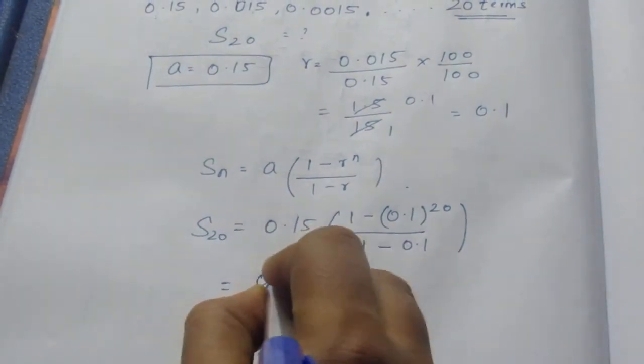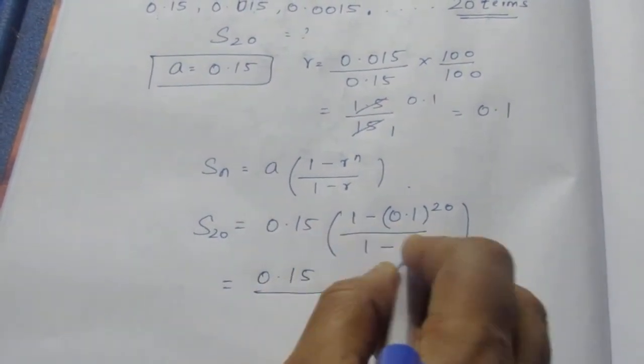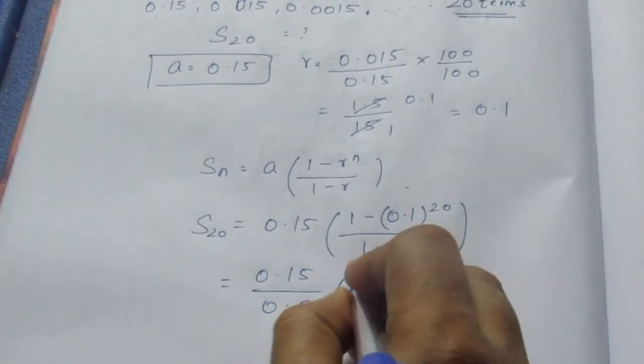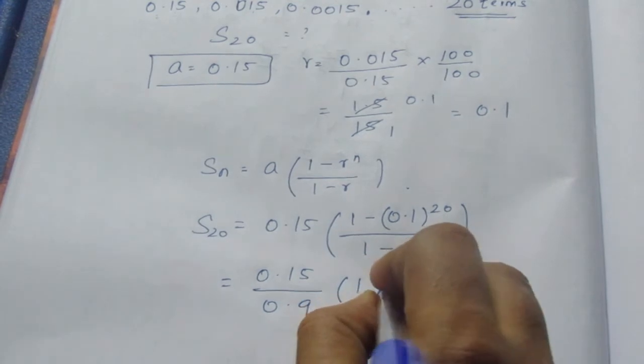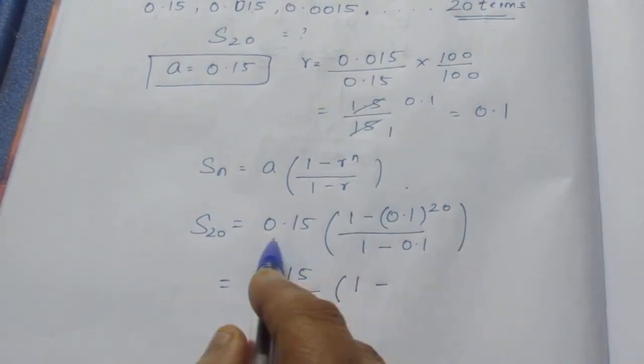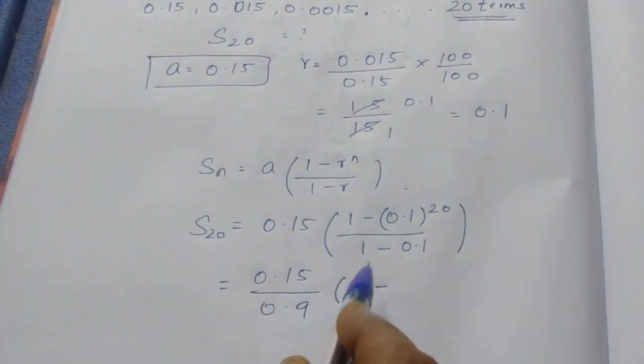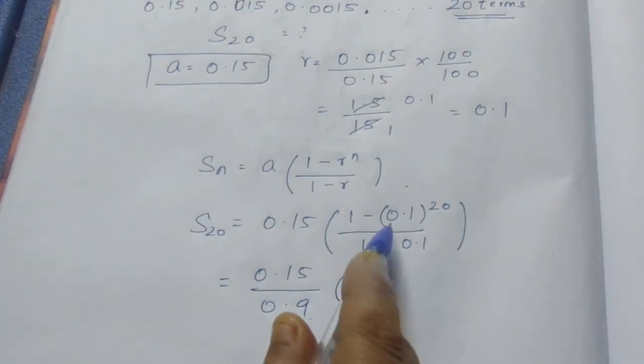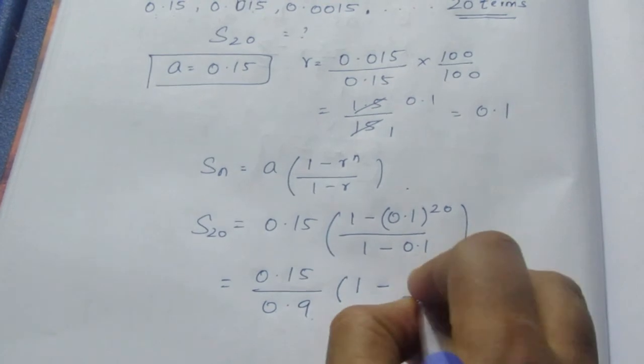I can write, this I have taken it outside, it becomes 0.9. 1 minus 0.01—sorry, 0.1 is 0.9. Here this can be written as 1 by 10, the whole to the power 20.